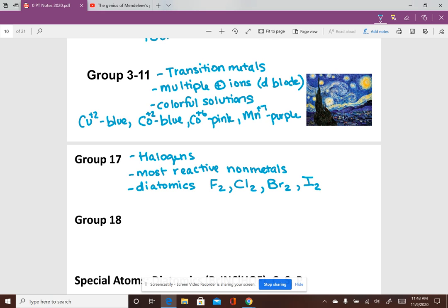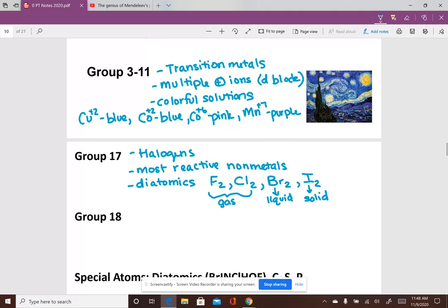It's also the only group on the periodic table that has elements in all three phases at STP. So fluorine and chlorine are gases. Bromine is a liquid. And iodine is a solid. Only column on the periodic table that has that.